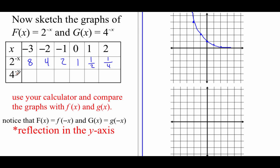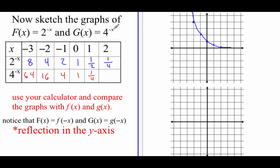Doing something similarly with the next one. If we plug in negative 3, we get a double negative again, so that turns into 4 cubed which is 64. If we plug in negative 2, we get 4 squared which is 16. 4 to the first power is just 4. Anything to the zero power is just 1. If we plug in 1, we get 4 to the negative first which is 1 fourth. And if we plug in 2, we get 4 to the negative second power which is 1 sixteenth. So plotting this one out on this bottom graph, nothing shows up until we hit that negative 1, 4 value. Then at 0 we're at 1, at 1 we're at a fourth, and at 2 we're at a sixteenth. So our graph comes in very steep, hits these points, and again starts to flatten out around that x-axis.